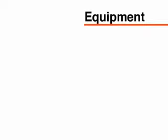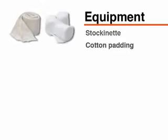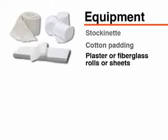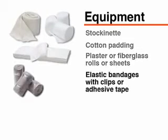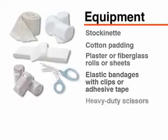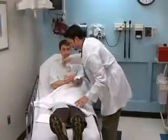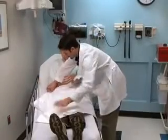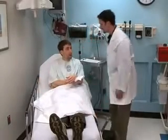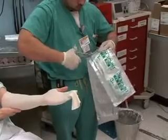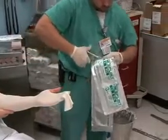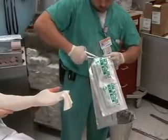The materials needed for basic extremity splint placement include a stockinette, cotton padding, plaster or fiberglass rolls or sheets, elastic bandages with clips or adhesive tape, heavy-duty scissors, and a bucket of water. Use sheets or pads to protect the patient's clothing during splint application whenever possible. As an alternative to plaster rolls or sheets, you may also use prefabricated splint materials.